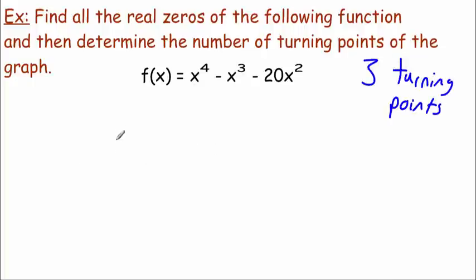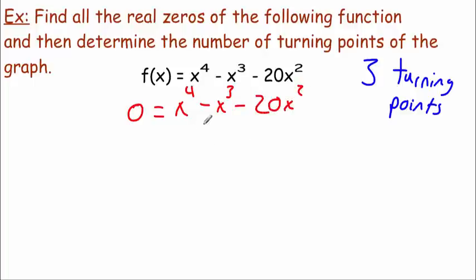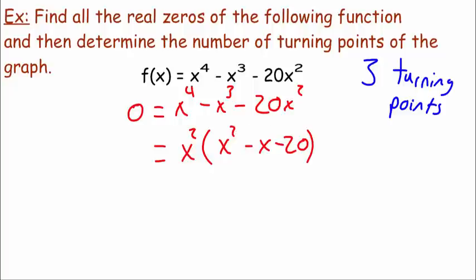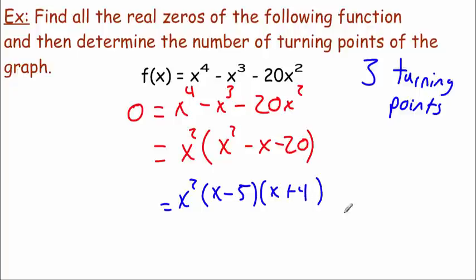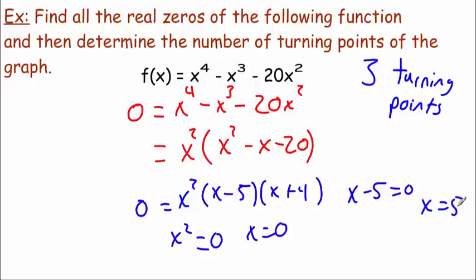Let's find where the zeros are located. We set zero equal to x⁴ - x³ - 20x². We need to factor the right side — I see x⁴, x³, x², so the GCF is x². That gives us x²(x² - x - 20). Now doing sum and product factoring inside the parentheses: we need factors that multiply to -20 and add to -1, so (x - 5)(x + 4). Setting each factor equal to zero: x² = 0 gives x = 0; x - 5 = 0 gives x = 5; x + 4 = 0 gives x = -4.